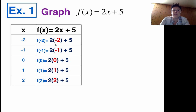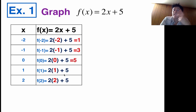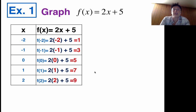Let's do the math: 2 times negative 2 is negative 4, plus 5 is 1. 2 times negative 1 is negative 2, plus 5 is 3. 2 times 0 is 0, plus 5 is 5. 2 times 1 is 2, plus 5 is 7. And 2 times 2 is 4, plus 5 is 9. So my outputs are 1, 3, 5, 7, 9. I definitely see a pattern, and now I'm ready to graph.